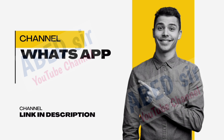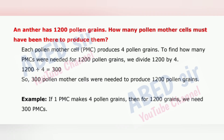Next important question: An anther has 1200 pollen grains. How many pollen mother cells must have been there to produce them? Each pollen mother cell (PMC) produces 4 pollen grains. To find how many PMCs were needed for 1200 pollen grains, we divide 1200 by 4. 1200 divided by 4 equals 300.